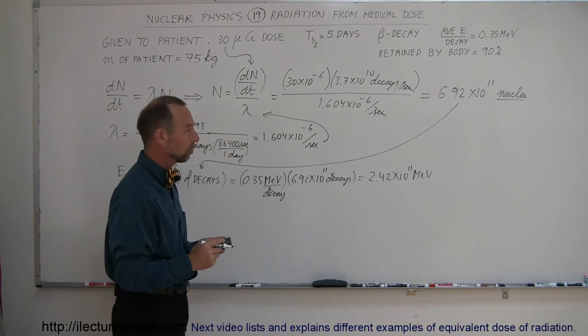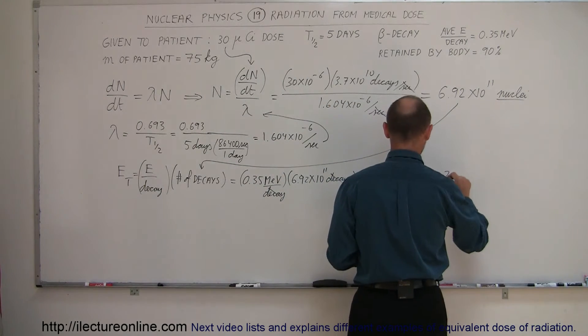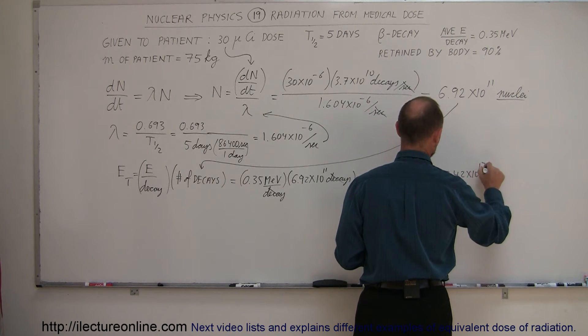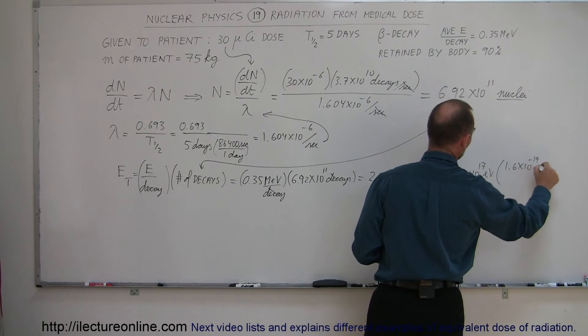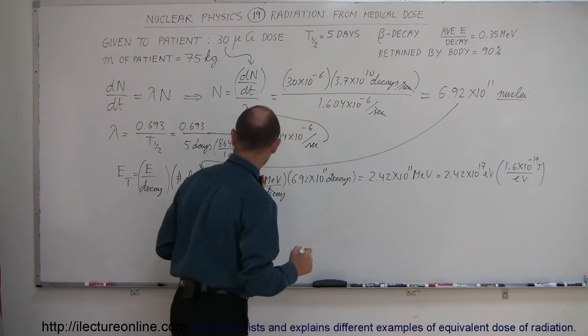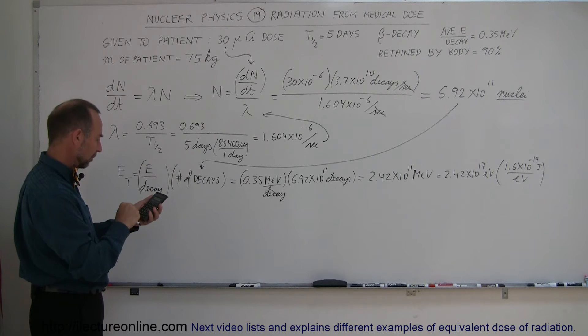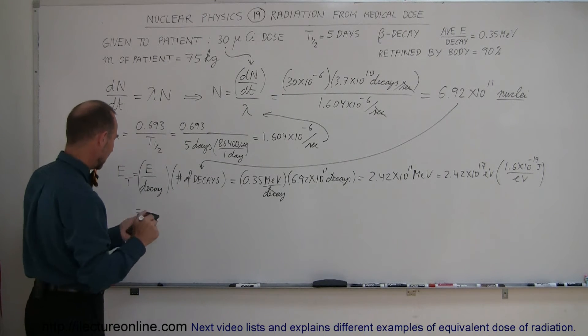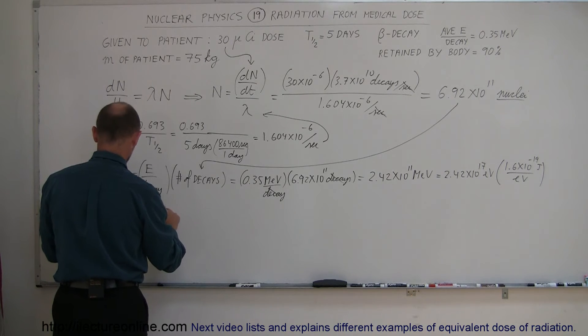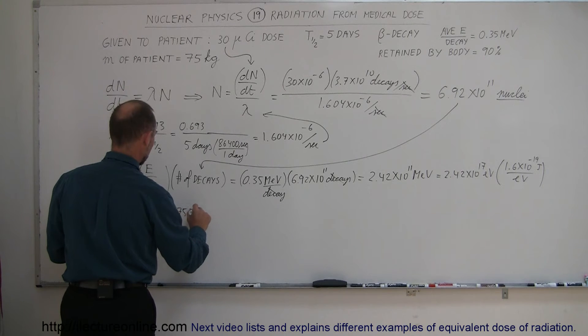So times 0.35 equals - that will give you 2.42 times 10 to the 11 MeV. Now, of course, we want to convert that to joules. So first we convert that to eV. Since a million is 10 to the 6, that will give us 2.42 times 10 to the 17th eV, and then multiply it times 1.6 times 10 to the minus 19 joules per eV. The energy total will then be in joules. That would be times 1.6 e minus 19 equals, and that will be equal to 0.03875 joules.